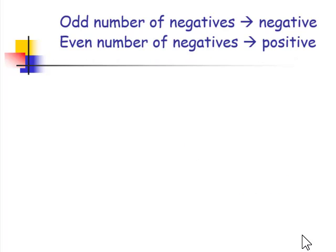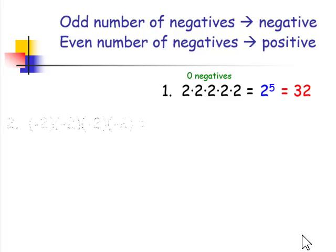An odd number of negatives being multiplied will result in a negative value. An even number of negatives being multiplied will result in a positive value. In our first case, we have 0 negative numbers being multiplied, so our result is a positive 32.